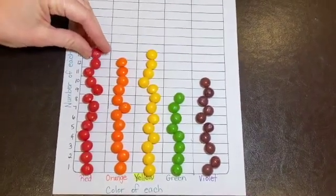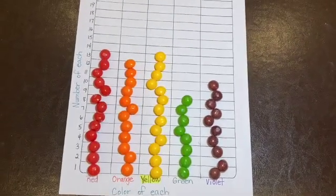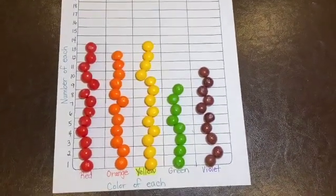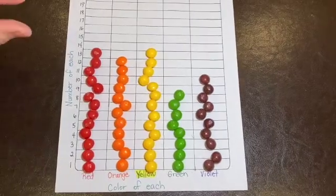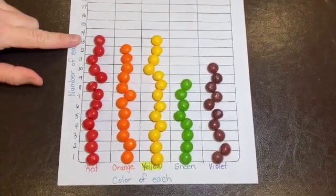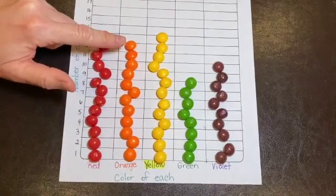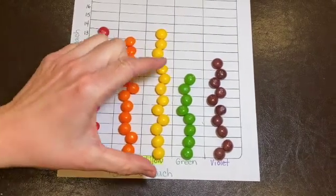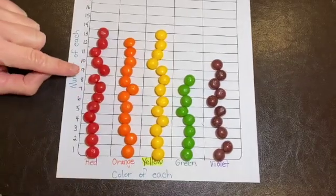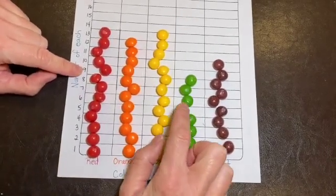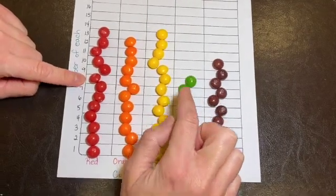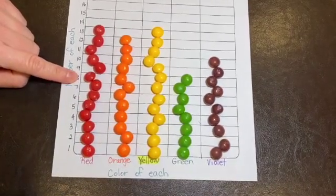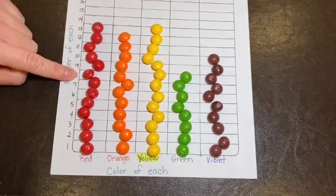My last two, there we go. Now we're going to analyze this bar graph. Which color has the least amount, the smallest amount? Is it the red? No. Is it the orange? No. Look how big this line or bar is and look how small the green one is. If you look across there's one, two, three, four, five, six, seven, eight, eight green and thirteen red. Green is definitely the smallest, it has the least amount.